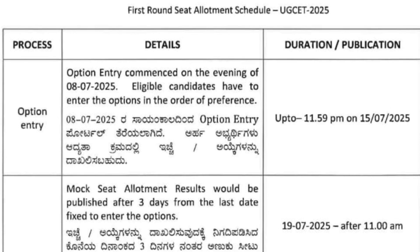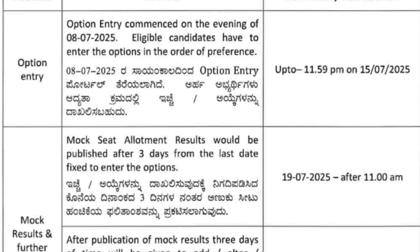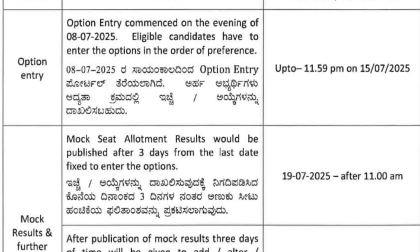After option entry, KA or MCC — MCC means Medical Counseling Committee — will release the mock allotments and final allotments. You will have to download the allotment letters, pay the fees, and report to the college. Some may need to attend document verification again or re-upload certificates.